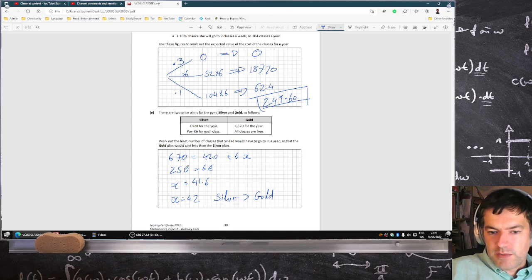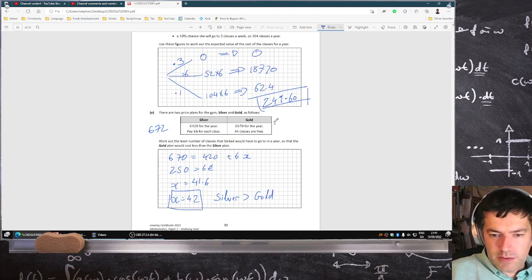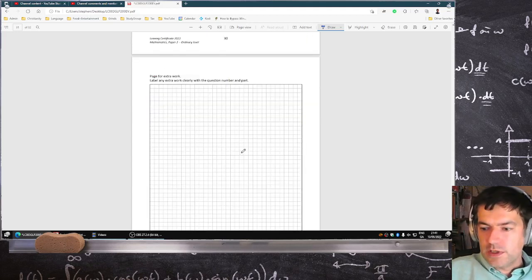So the gold plan will cost less than the silver plan at 42 classes. Let's test it out: €420 plus €6 times 42, that would come in at €672. So she'll be saving €2 for going with the gold one, as long as she goes to 42 classes in the year.